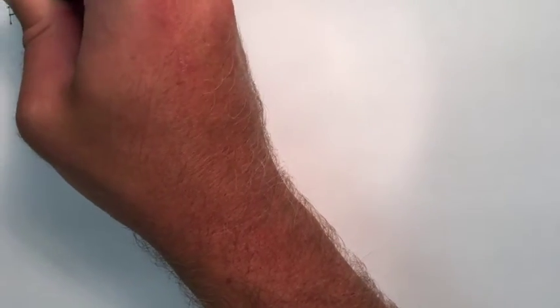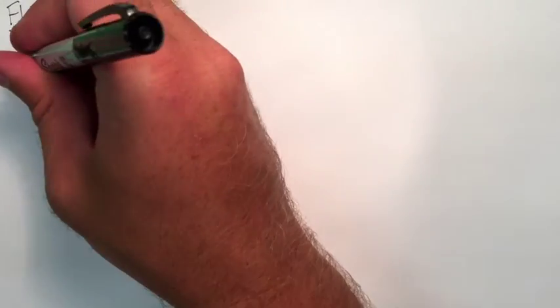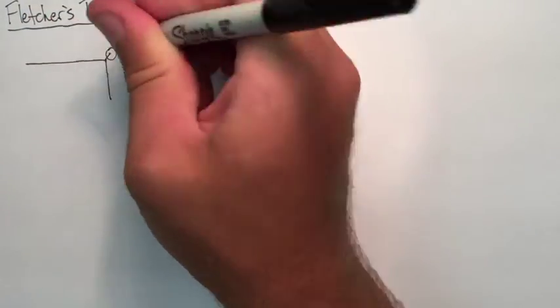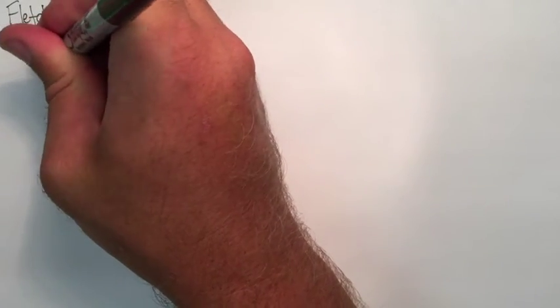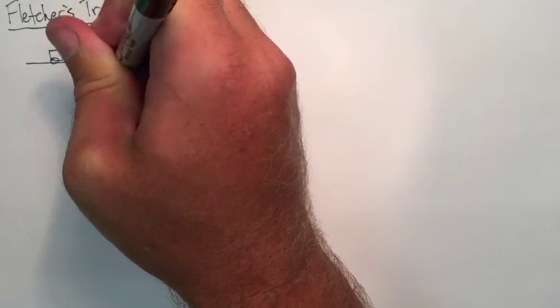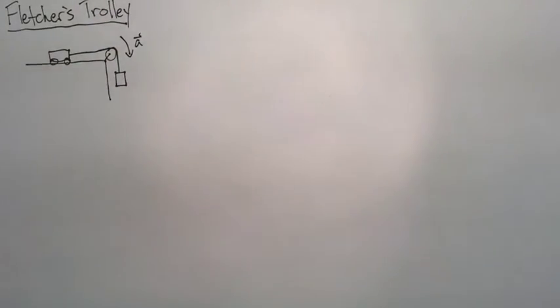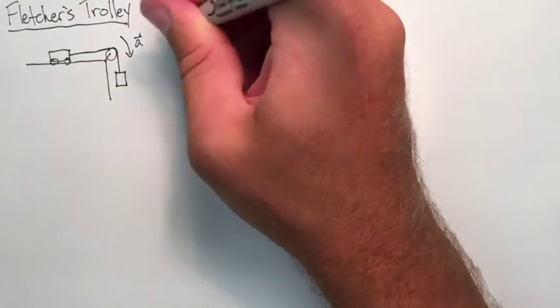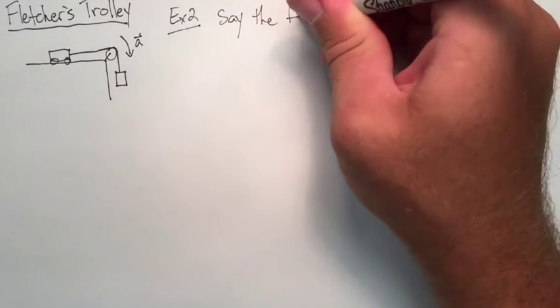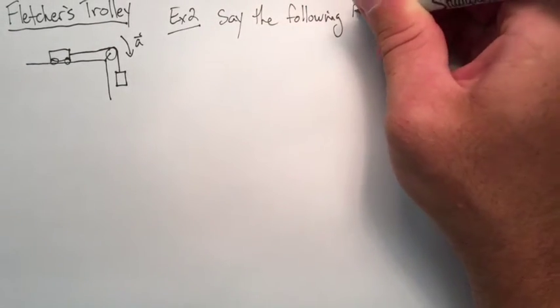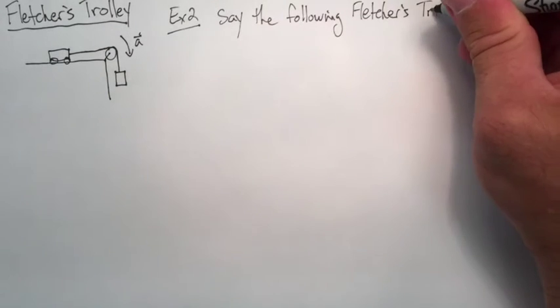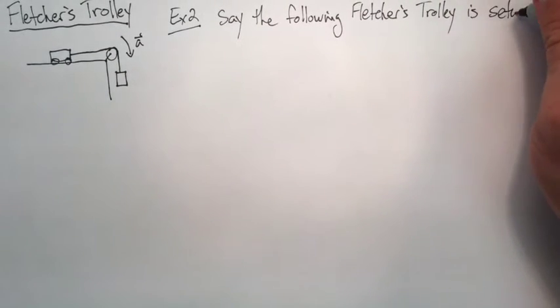Okay now we're going to do an example with a Fletcher's trolley. So let's say the following Fletcher's trolley is set up and it looks like this. Basically it's just an Atwood's machine where one of the objects is placed on a shelf. And we know the acceleration has to be in the direction that's over the edge of the shelf. Sometimes it'll be a cart, sometimes it'll have friction. In this case it'll be a cart with no friction.